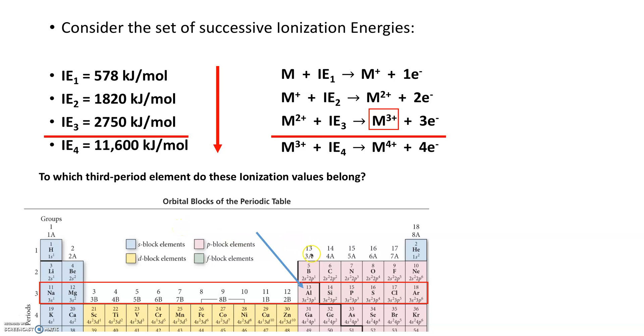Aluminum. How do I know that? Well, aluminum's in group 3A. It has three valence electrons, and we even see it here. It's a 3s2 3p1.